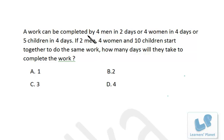One more problem of time and work. A work can be completed by 4 men in 2 days, 4 women in 4 days, or 5 children in 4 days. Now friends, the problem is going to be very simple.